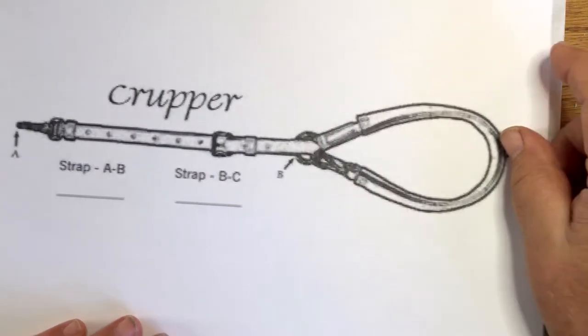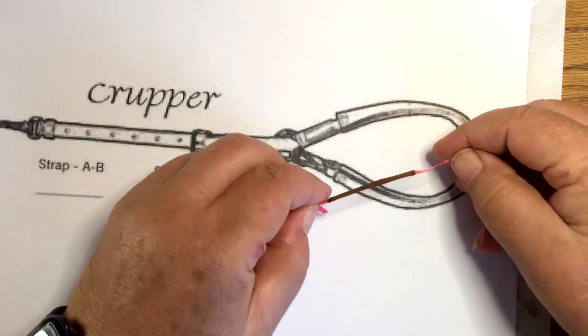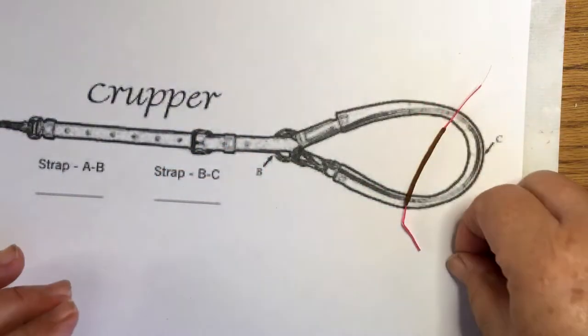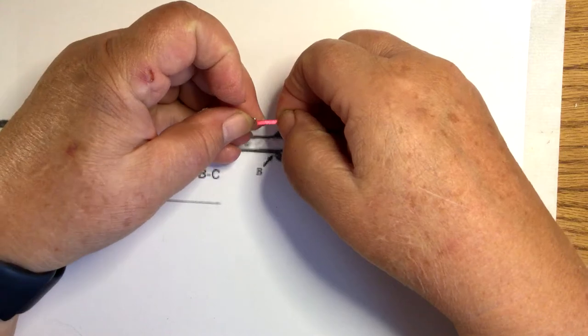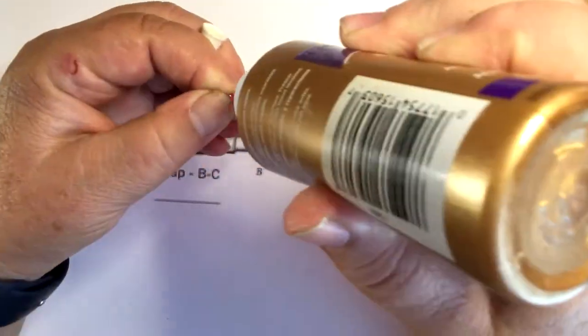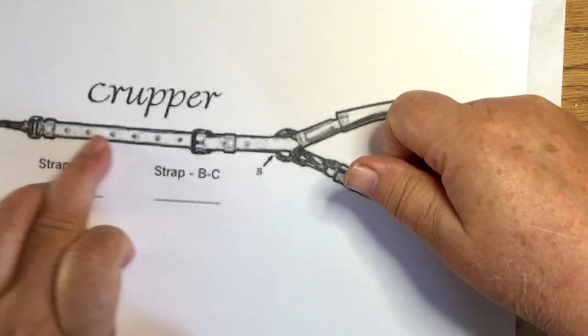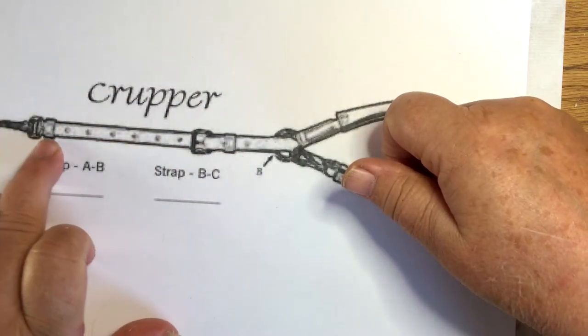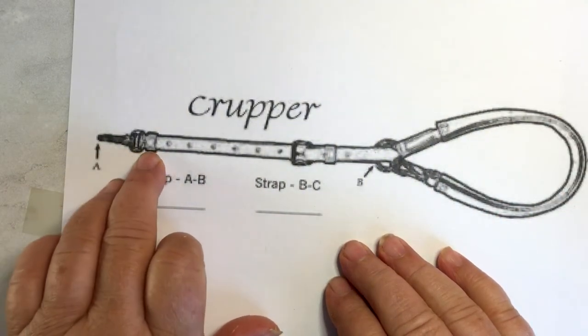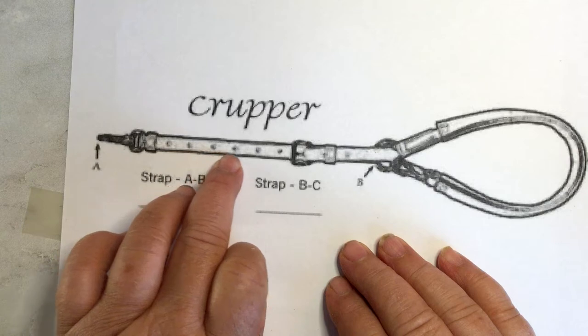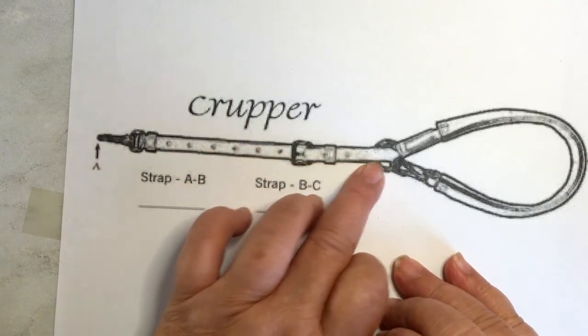Okay, I found a breakdown on the web of this particular crupper and if you notice it's got three straps. This one here is the tail strap so we're working on that. It's got a ring here and now we're gonna look at this one. This is a long A strap, it's got a hook and then keeper and then it slips into a buckle.